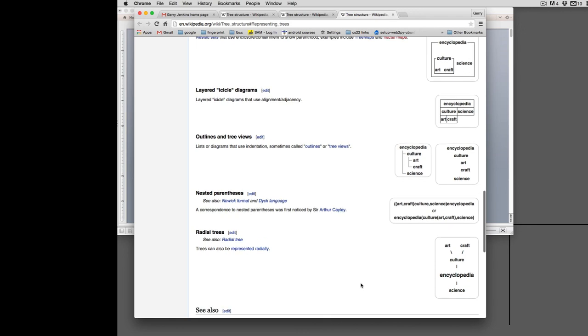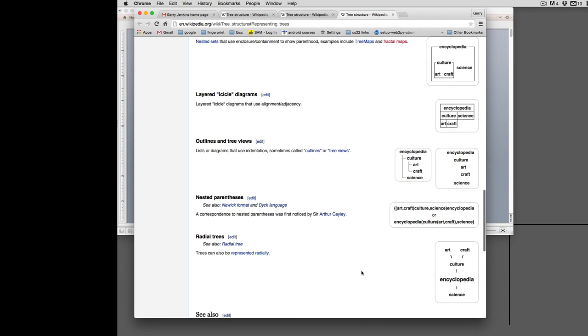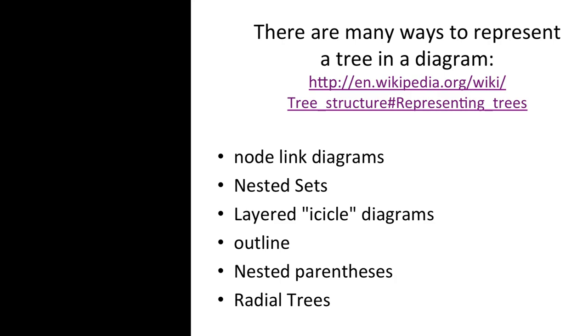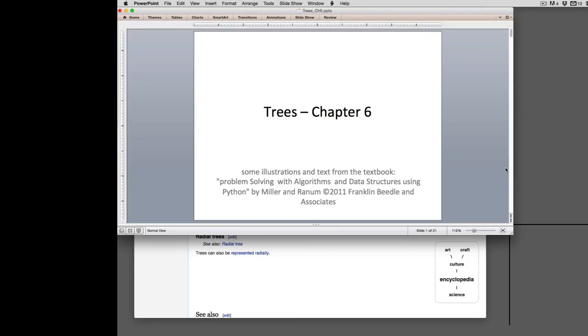And then finally you have radial trees where you have the root in the center and the tree branches out from the root. So those are kind of the different ways of representing a tree. And that's it.